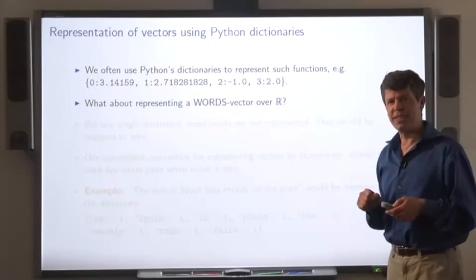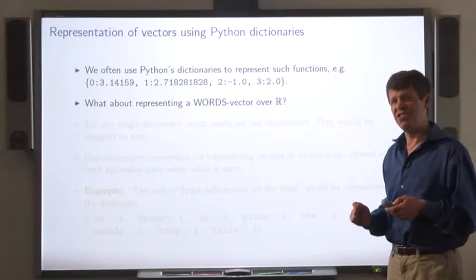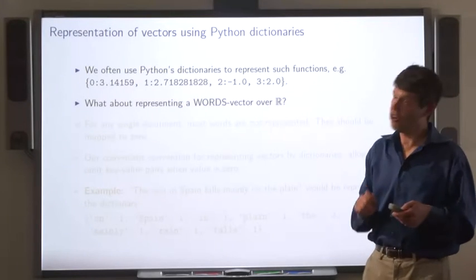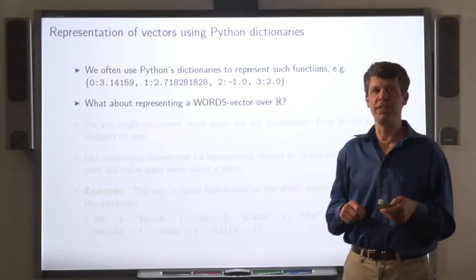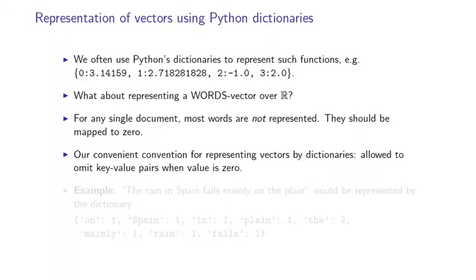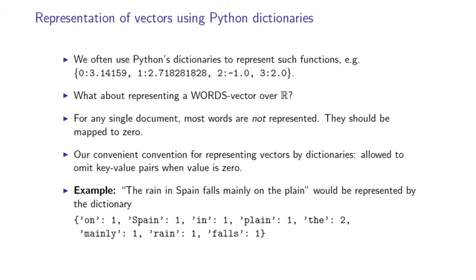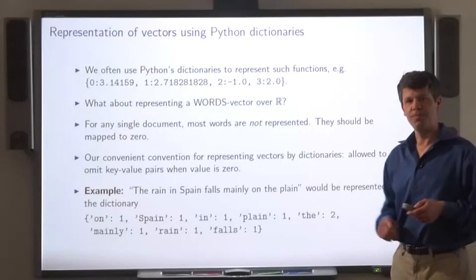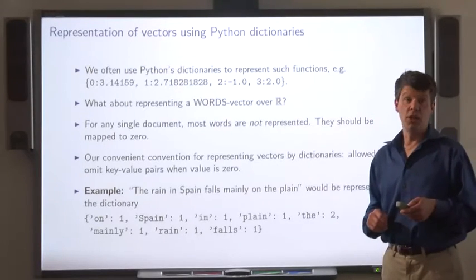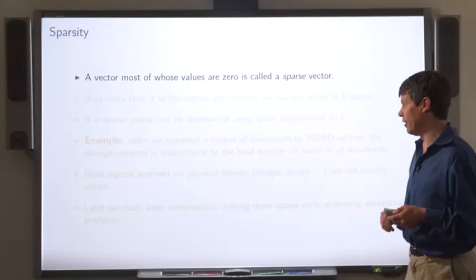Well, this representation starts looking not so good because there are a lot of English words and documents don't tend to include them all. Well, we adopt the convention that key value pairs where the value is zero can be omitted from the dictionary. So the document, the rain in Spain falls mainly on the plain, would be represented by this function. We haven't represented those words that don't occur in the document.